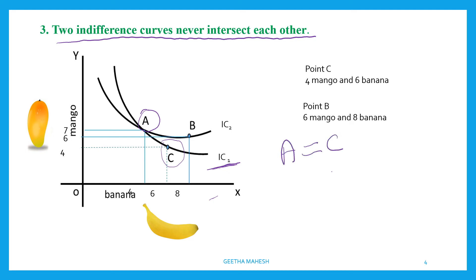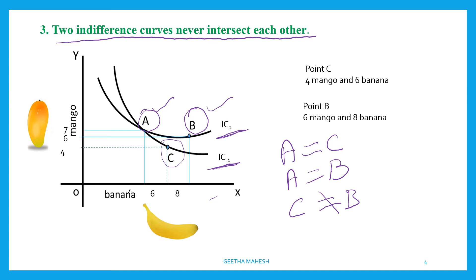Combination A and combination B lie on IC2, so A gives the same level of satisfaction as B. However, C is not equal to B — because combination B includes six mangoes and eight bananas, while combination C includes four mangoes and six bananas. Definitely, B will give a higher level of satisfaction than C. Moreover, combination B lies above C towards the right, so it lies on a higher indifference curve and gives a higher level of satisfaction. Therefore, if two ICs intersect each other, the results will be inconsistent.